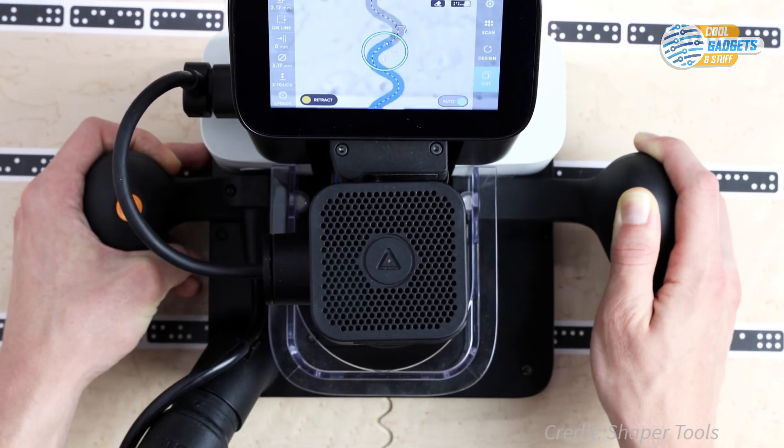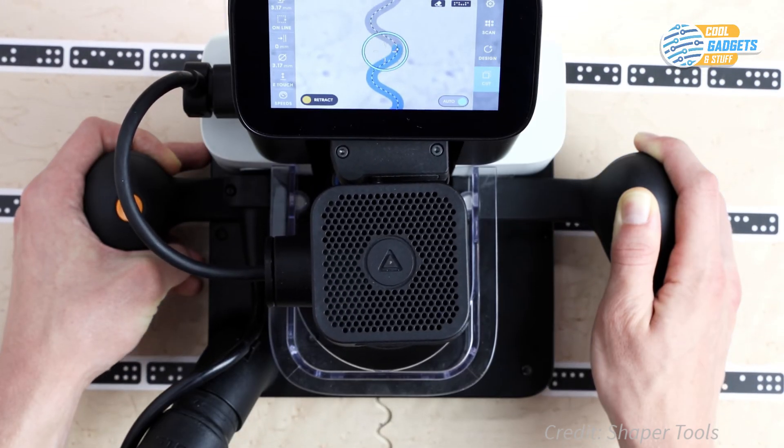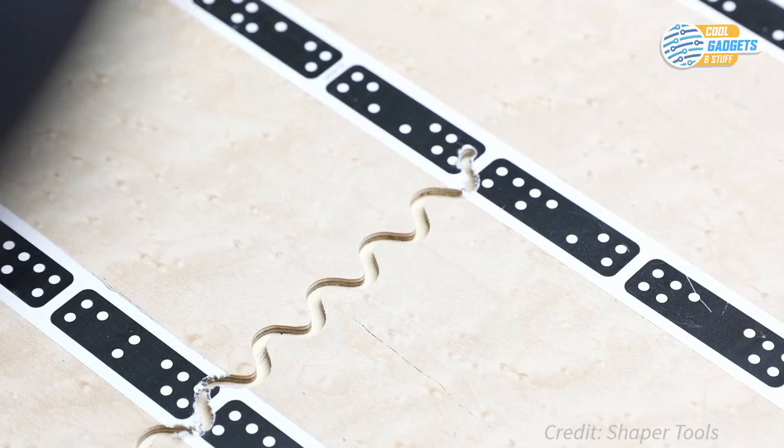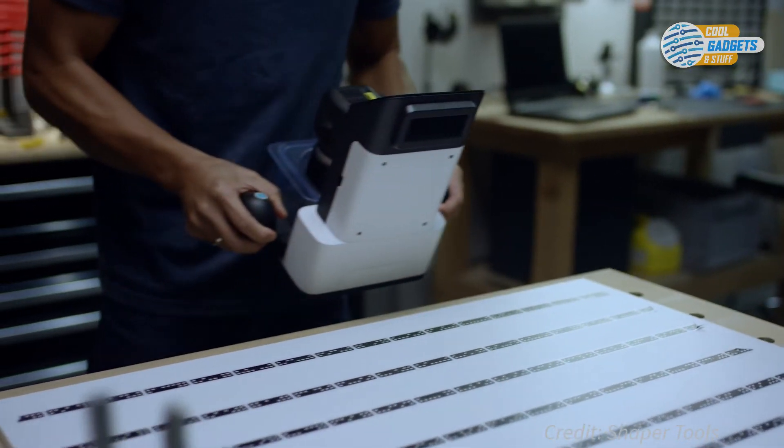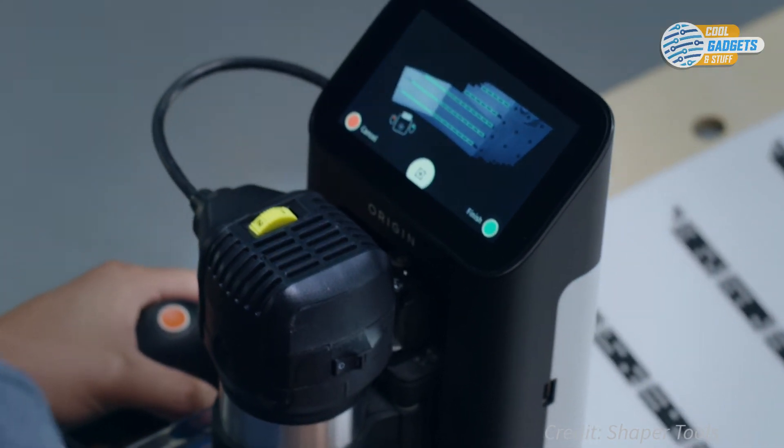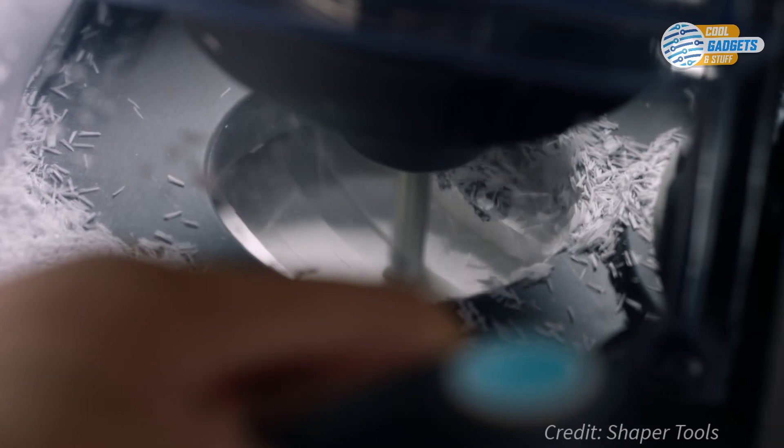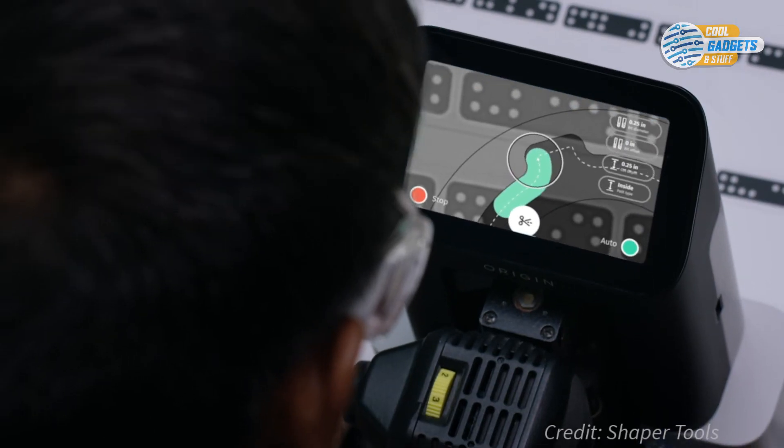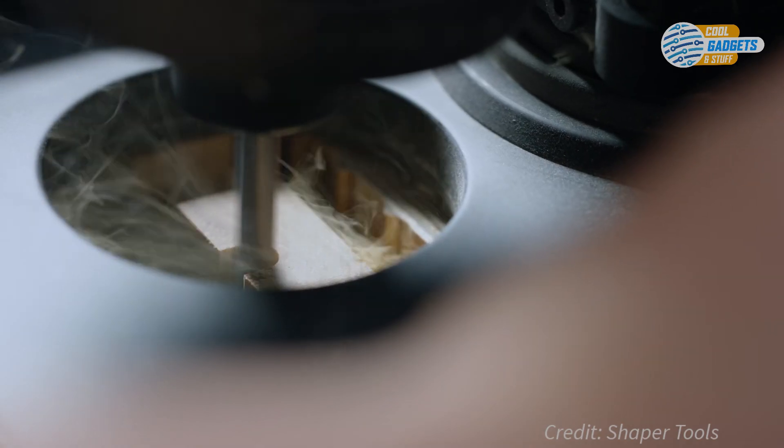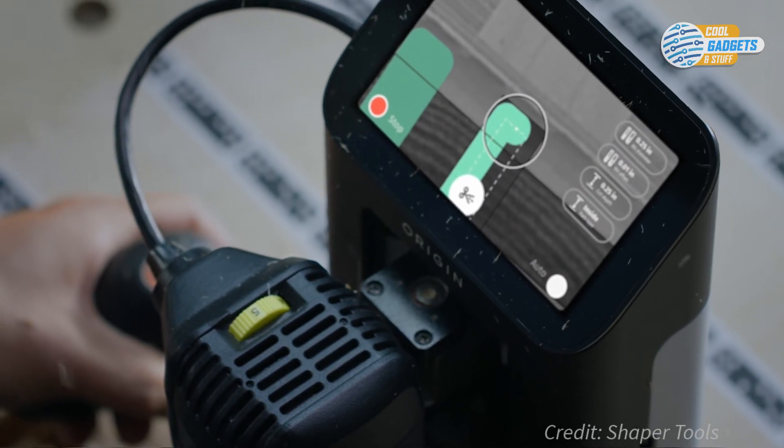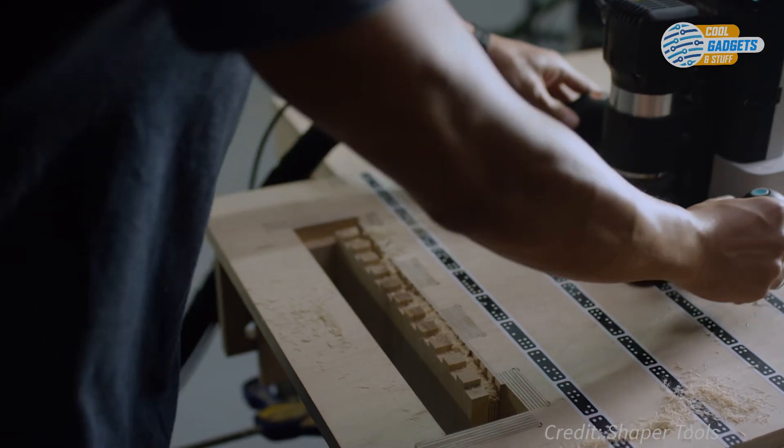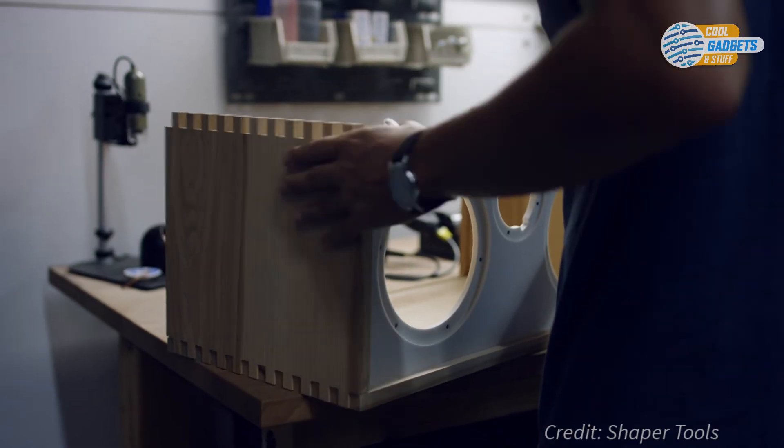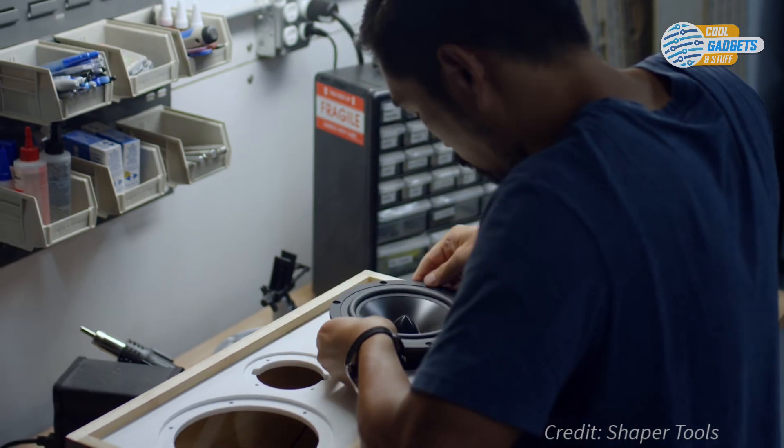Kind of like an auto-correct for your hands, simply apply shaper tape around the area to be cut and scan the surface to generate a map. As long as you stay in the general cutting area, the spindle will auto-correct 100 times a second to keep the cutter in the right position. Origin remembers its position so you can pause and restart your work. If you move too far off course, the blade automatically retracts, preventing any damage to the workpiece.